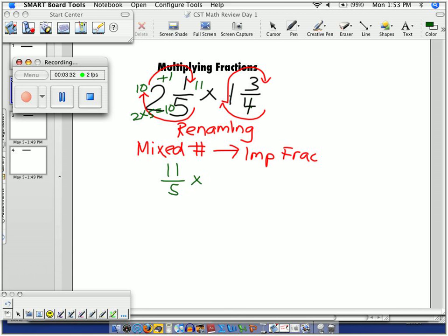Over here, 4 times 1 is 4. 4 plus 3 is 7. 7/4ths.